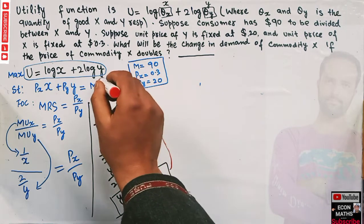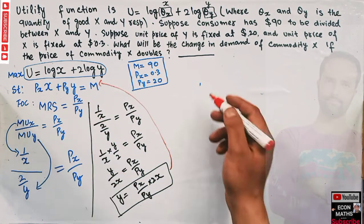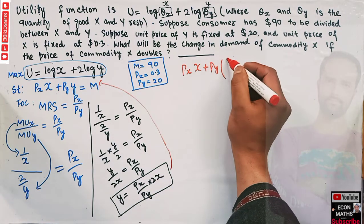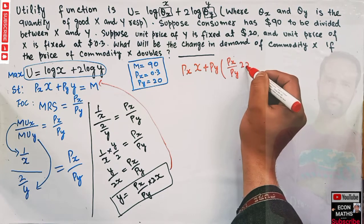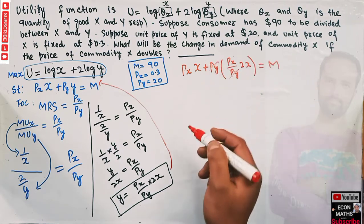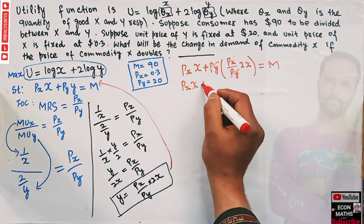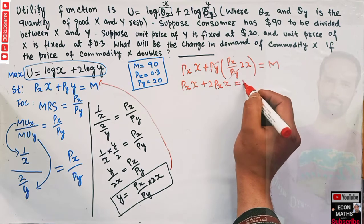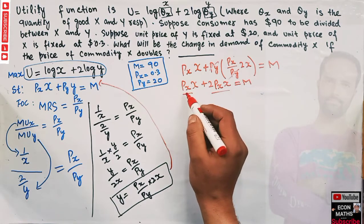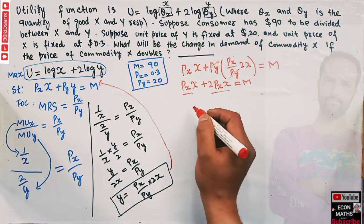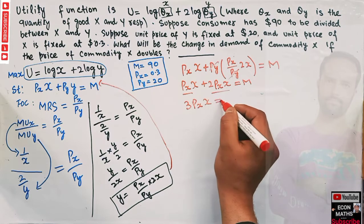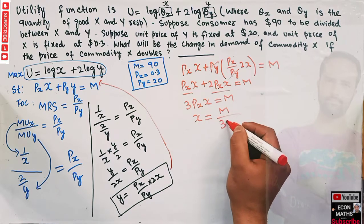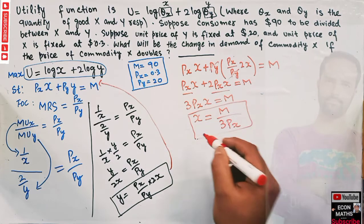Substituting Y = (Px/Py)·2X into the budget constraint Px·X + Py·Y = M: we get Px·X + Py·(Px/Py)·2X = M. The Py cancels, giving Px·X + 2Px·X = M, so 3Px·X = M. Solving for X, the demand function is X = M / (3Px).